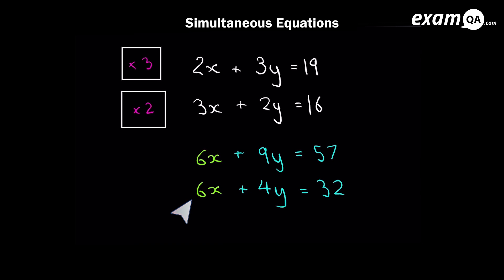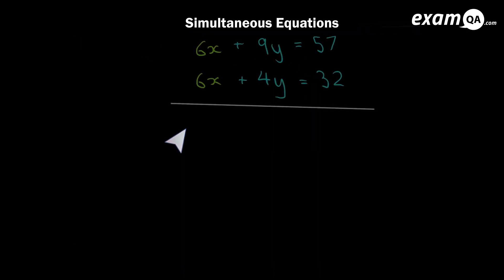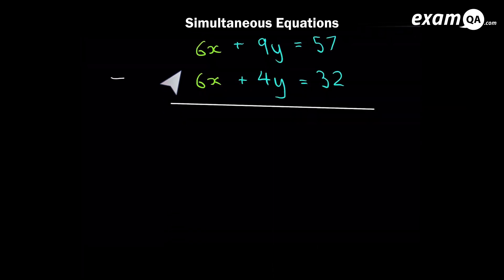So in the next step, we're going to look at the two new equations we made and we're going to subtract them. That will get rid of the 6x's. So let's go ahead and do our subtraction. 6x's cancel each other off. Then we have 9y minus 4y and that gives us 5y. Then we have 57 minus 32 and that gives us 25. Now look here, we've got a nice easy equation now. We've got 5y equals 25. And there's only one unknown, so you can just go ahead and solve it.